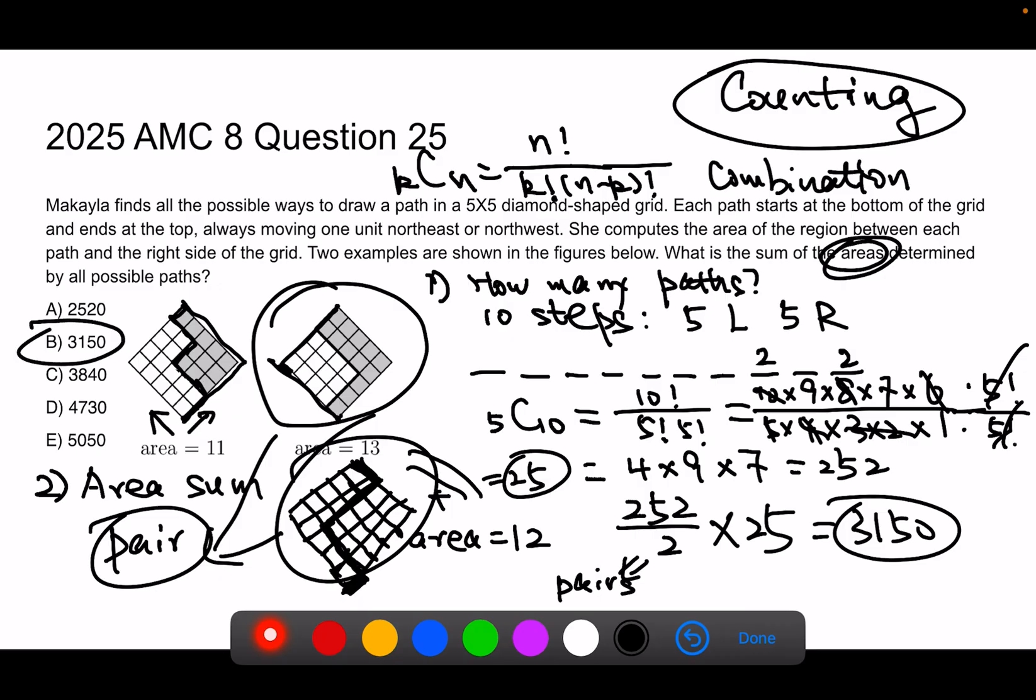It's a really good question 25 for AMC 8, because technically it has two parts. The first part is a good number theory question, or good combination question, where you need to turn this path into a combination. I'm actually picking five positions or five steps to be left out of my 10 potential steps. The second part is a smart way to find pairs for each possibility, and their sum is 25.